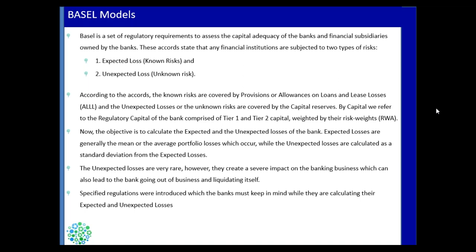According to the Basel Accords, expected losses are covered by provisions or allowances on loans, while unexpected losses are covered by capital. The capital we calculate is Tier 1 and Tier 2 capital, which is weighted by risk-weighted assets.